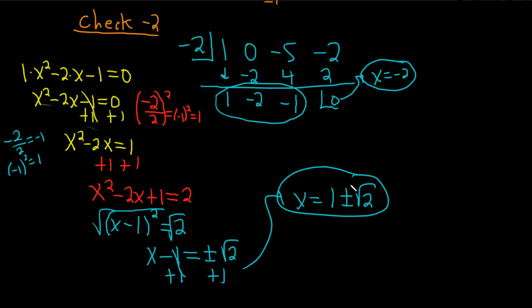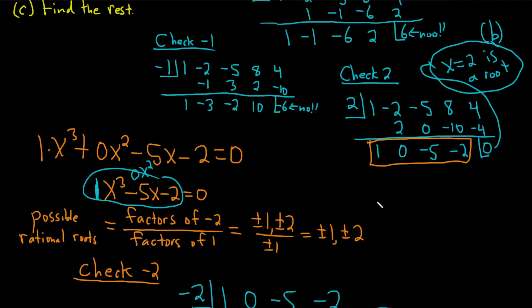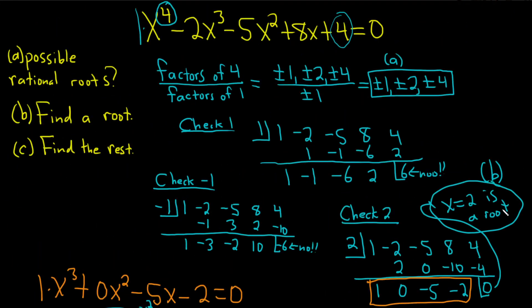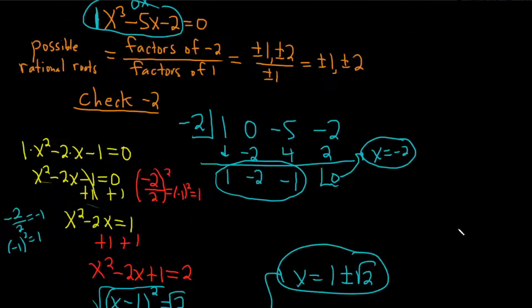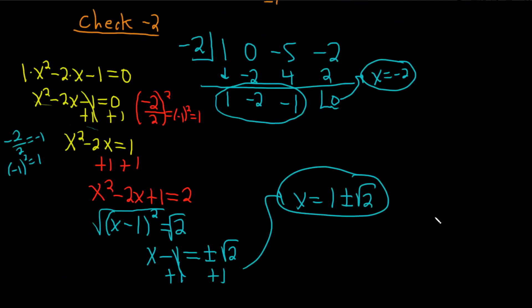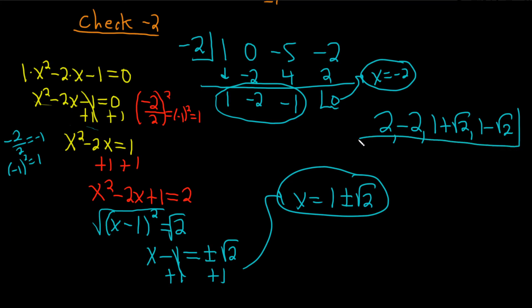We have all of our answers. Our first root was 2, then negative 2, then 1 plus the square root of 2, and 1 minus the square root of 2. We have successfully solved this quartic equation using algebra. I hope this video has been helpful. Good luck.